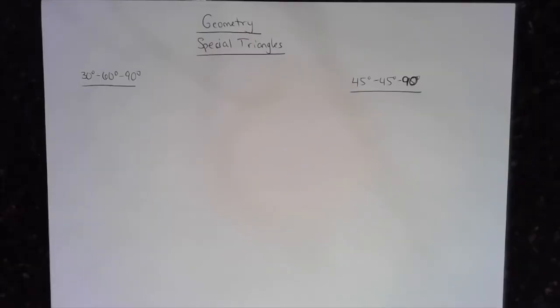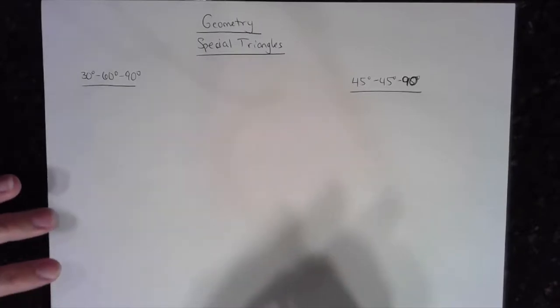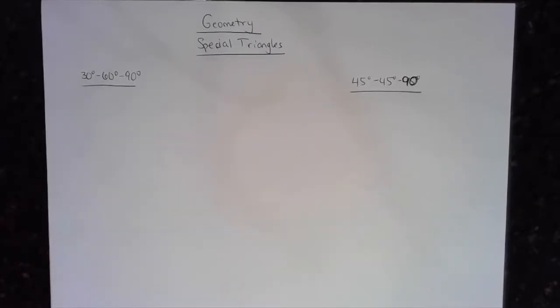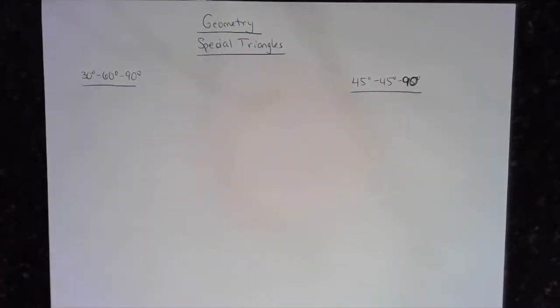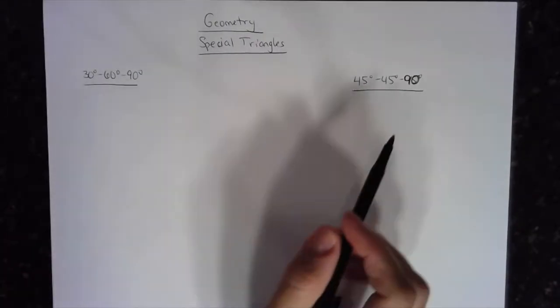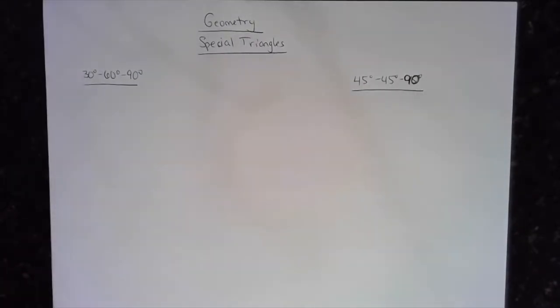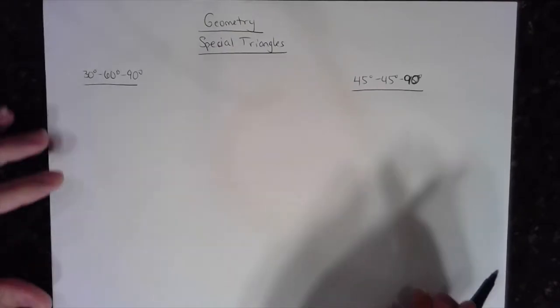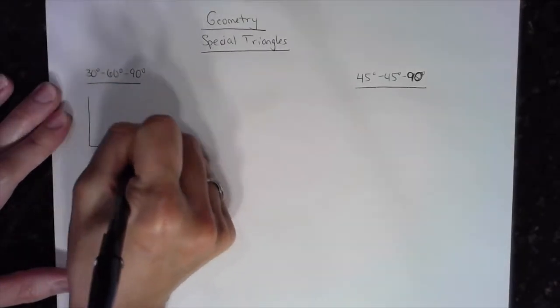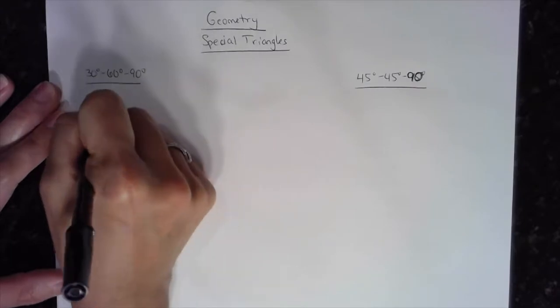Hi everybody. We're going to do a little geometry today, and I'm going to focus on something that a lot of students forget. This is something that you do see on the SAT and the ACT. For those of you that are still in high school, you have special triangles: the 30-60-90 right triangle and the 45-45-90 right triangle.